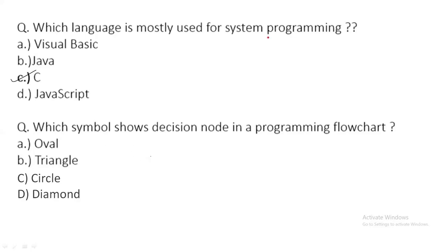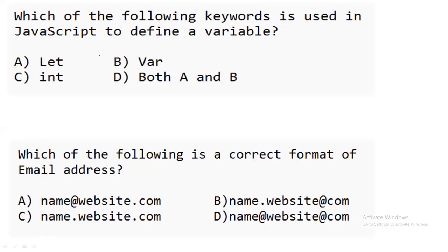The next question: which symbol represents a decision node in a programming flowchart? The diamond shape symbol represents a decision node. Oval stands for a terminator like start or end, triangle is used for merging processes into a common flow, and the diamond shape is used for the decision node.